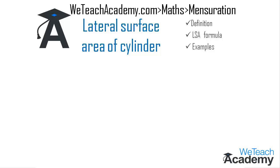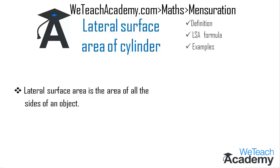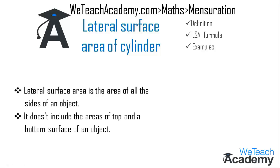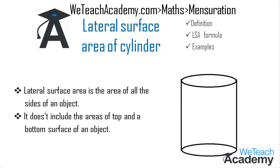First, let us define the lateral surface area. Lateral surface area is the area of all the sides of an object, and it does not include the areas of the top and bottom surfaces of an object. Let me explain this using a rough diagram of a cylinder. Here there is a cylinder in which the top and bottom surfaces are circles and the side portions are curved. Lateral surface area includes only this curved side area.